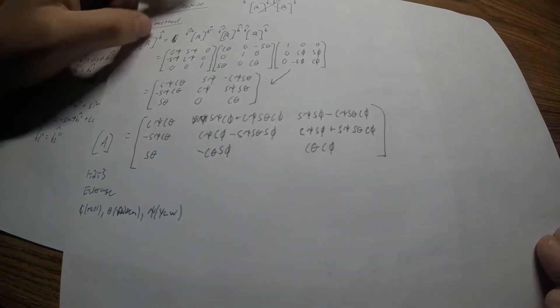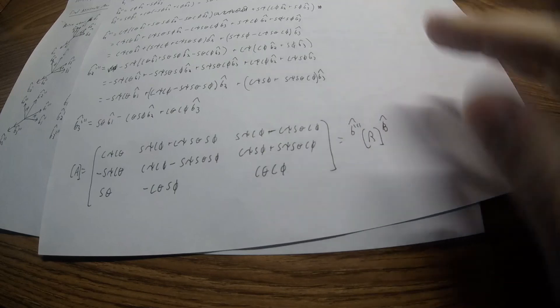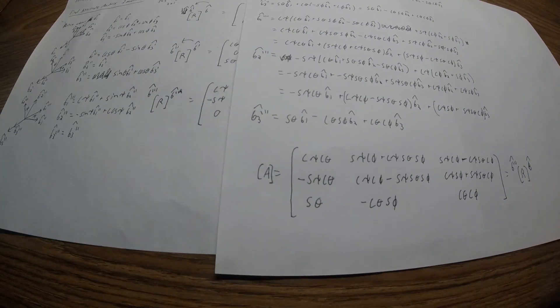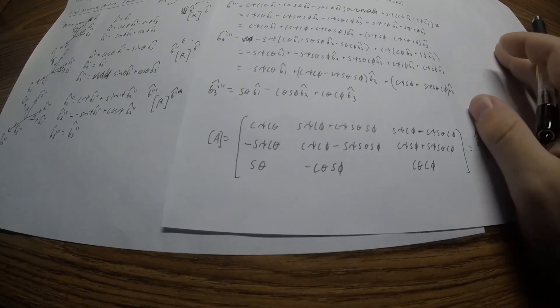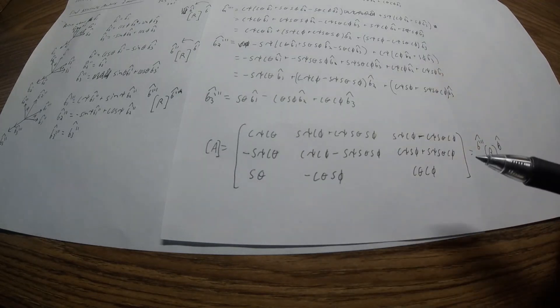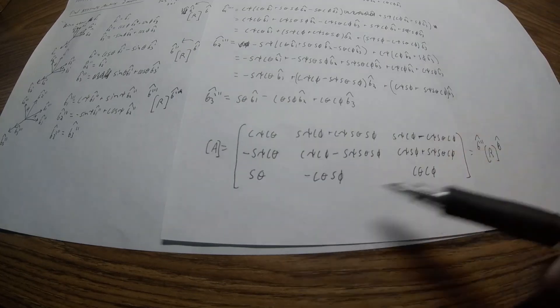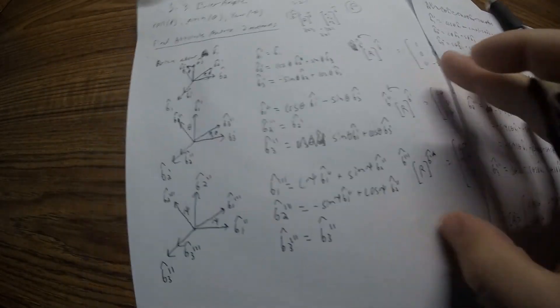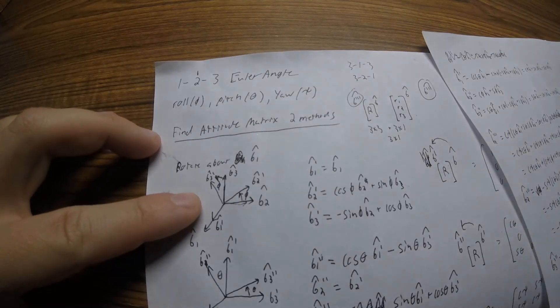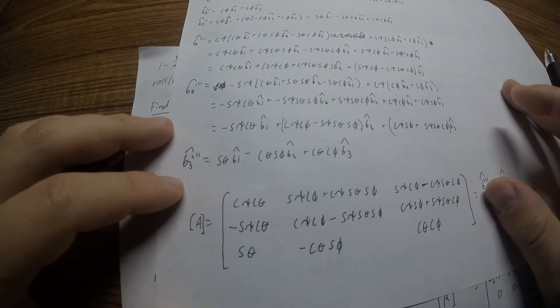There are more things we can do with the attitude matrix, like inverse kinematics or a small angle approximation, but for this video we're just covering how to find it. These processes can be done for every single Euler angle combination. Once you have them in this form, they never change for that sequence — for 1-2-3 it will always be this matrix. Just make sure you're using the same angle convention, because a different convention will give different angles and the result may not look as clean.